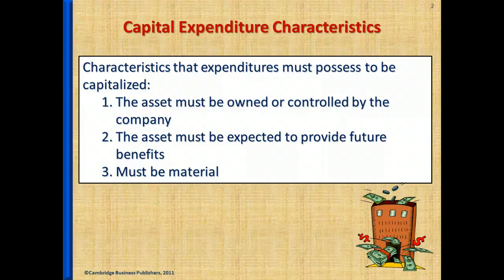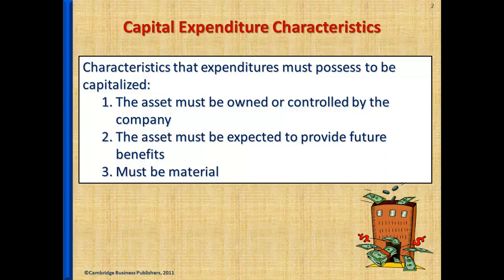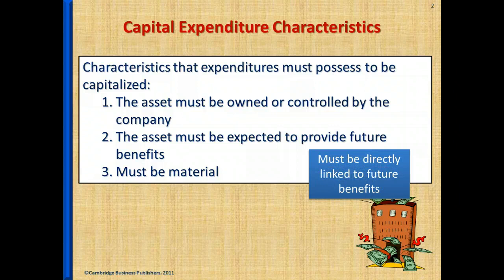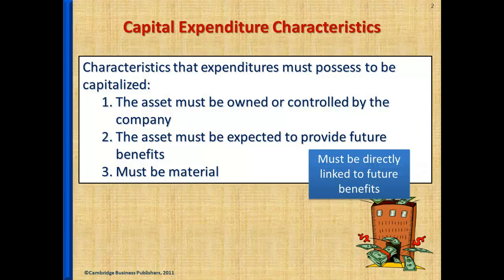So which capital assets should be capitalized? There are three requirements: the asset must be owned by the firm, it must provide future benefits, and it must be material. What material means is that the cost of the asset is typically substantial. For example, buildings and computer systems would be capitalized. Office supplies, for example, would typically be expensed — they may be shown on the balance sheet as a short-term asset, as supplies — but the cost of those supplies are recorded as an expense on the income statement in the period in which they are used.